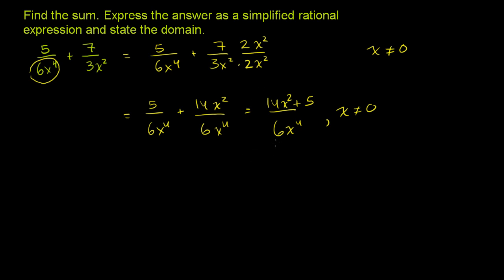That's about as simple as we can make it. We can't divide—14 is divisible by 2 and so is 6, but 5 isn't, so we can't divide everything by 2. And there's x squared and x to the 4th, but 5 has no x term on it, so we can't divide everything by x or a power of x. So we're done.